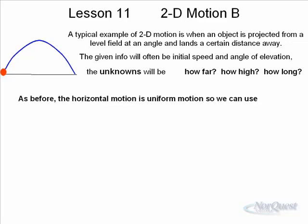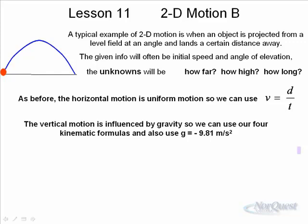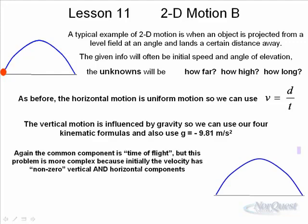As before, the horizontal motion is uniform, so we use v equals distance over time, or d equals v times t. The vertical motion is influenced by gravity, so we use one of our four kinematic formulas with g equals negative 9.81 meters per second squared. The common component is the time of flight.